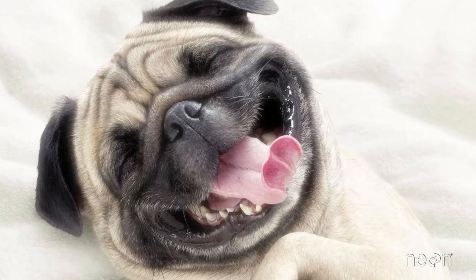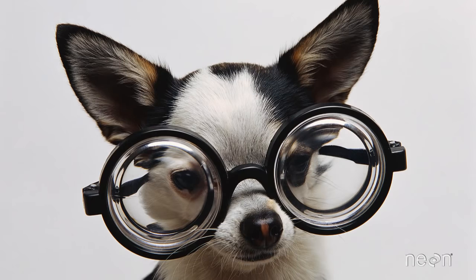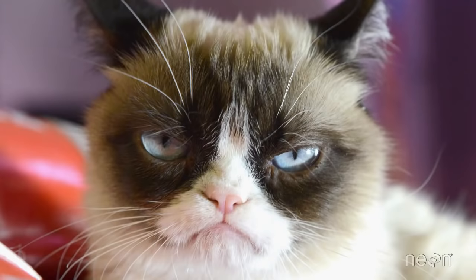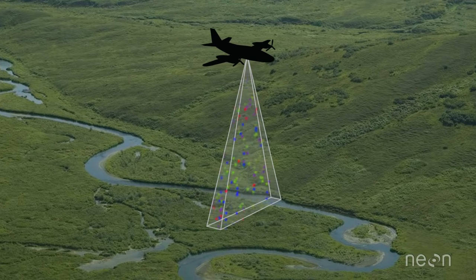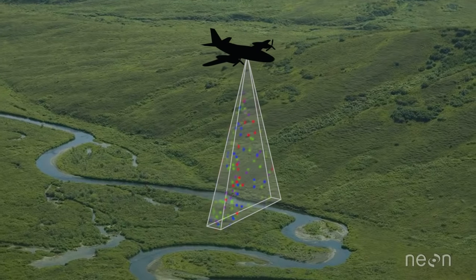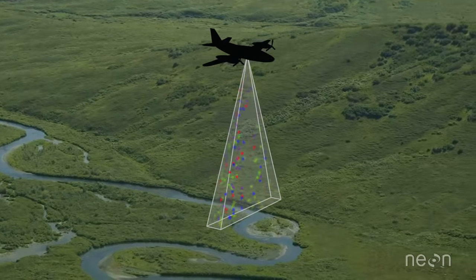While we often use cameras to take selfies and silly pictures of our furry friends, scientists use high-powered cameras called imaging spectrometers to measure changes in things that impact our environment, like water quality or vegetation cover and health.